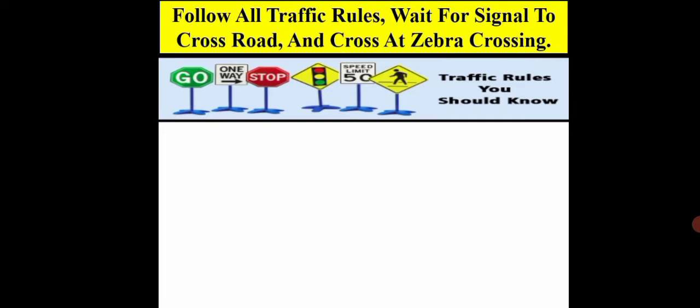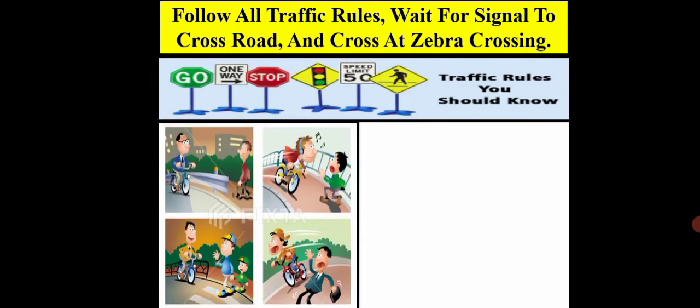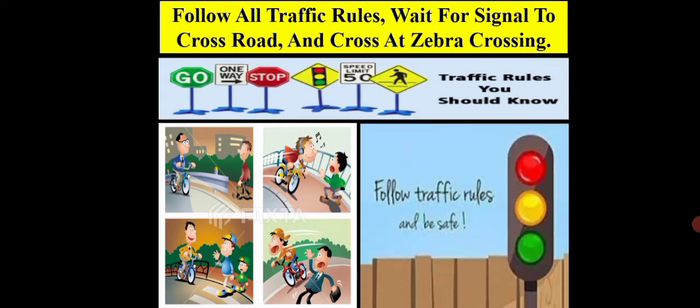A good citizen must follow traffic rules as well. Why is there a need to follow traffic rules? Traffic rules and regulations are for the safety of the public. You can see some of the traffic signs in these pictures. If there were no traffic rules and regulations, there would be severe danger to the lives of people. A lot of accidents are avoided by following traffic rules, which also keep the flow of traffic steady.